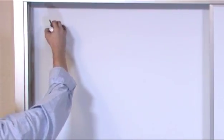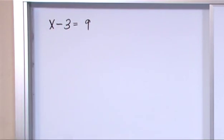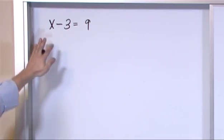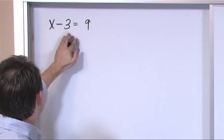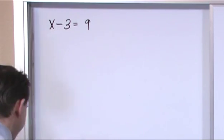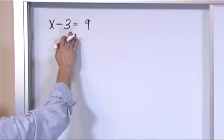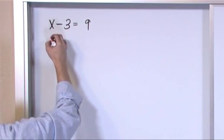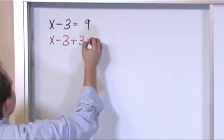The easiest equation you could probably have would be something like this: x minus 3 is equal to 9. How would you solve this equation? Remember the goal is to get x by itself. You want him by himself. The only thing standing in your way is you have this minus 3 here. So what you want to do is, because you have subtraction, addition is the opposite of subtraction so you want to add 3 to both sides.